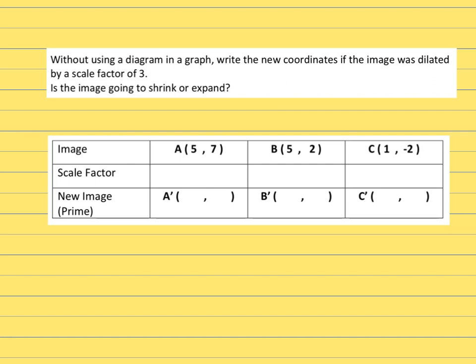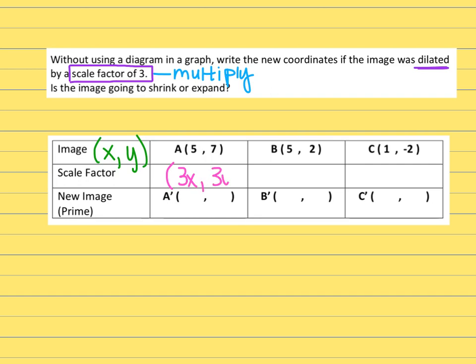Last example: without using a diagram, find the new coordinates if the image was dilated by a scale factor of three. All this means is that I need to multiply all the values — both x and y — by three. The original image is always algebraically labeled as (x, y). Whatever the scale factor is, that numerical value goes in front of x and y to signal multiplication. My rule is going to be (3x, 3y) — the shape gets three times bigger.